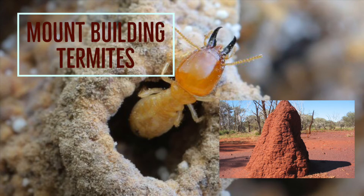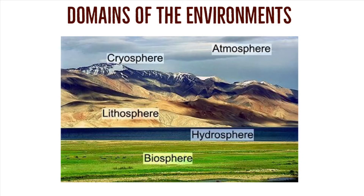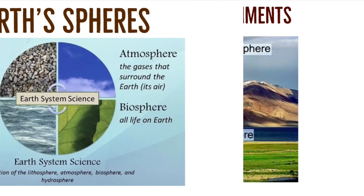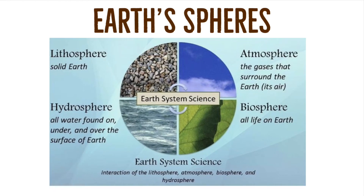Moving on to the next topic: domains of the environment, also called earth spheres. Everything in the earth system can be placed into four major subsystems — land, water, living things, or air. These four subsystems are called spheres: lithosphere (land or solid earth), hydrosphere (all water found on, under, and over the surface of the earth), biosphere (all living things on earth), and atmosphere (the air formed by gases that surround the earth).